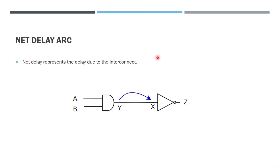The net delay arc represents the delay due to the interconnect. For example, the interconnect connecting the output of an AND gate to an inverter has a delay — that is the net delay arc. This information is not in the dot liberty file; it is extracted using an extraction tool, and during delay calculation this information is also used by STA.